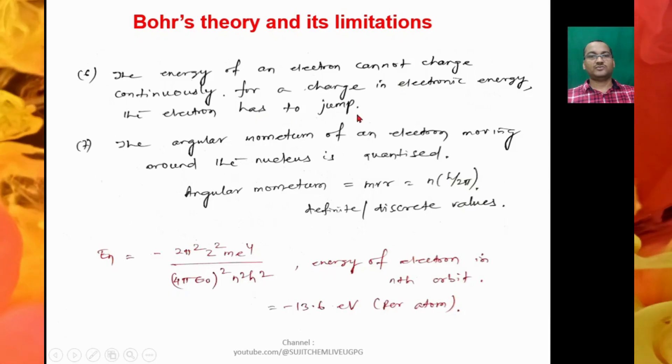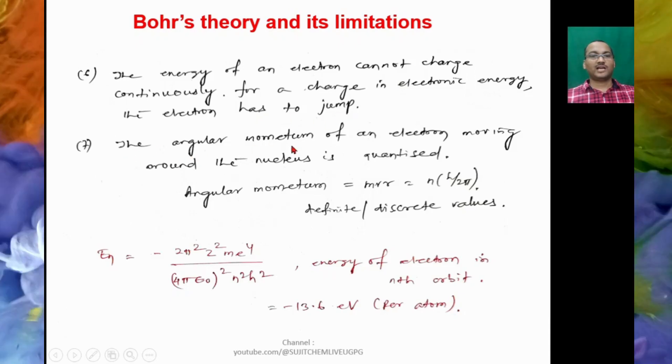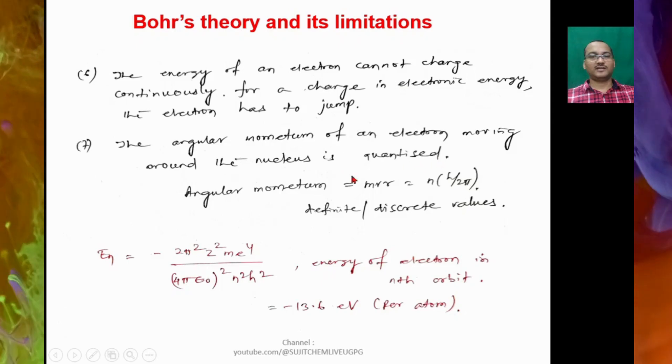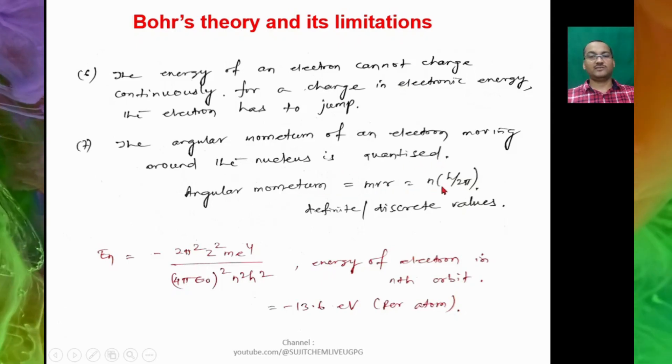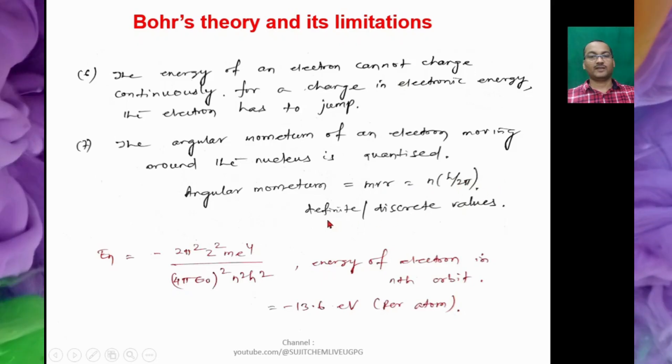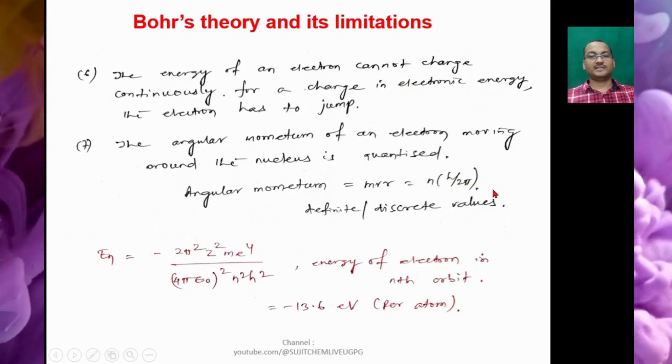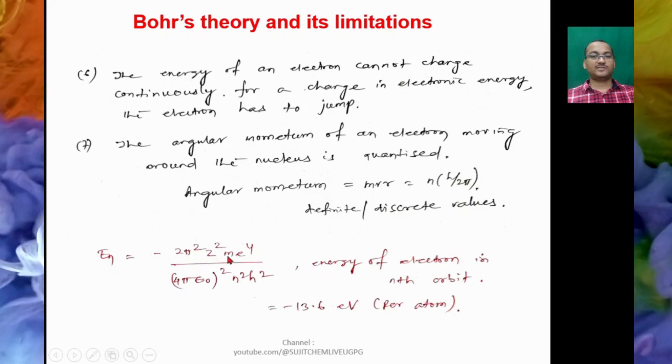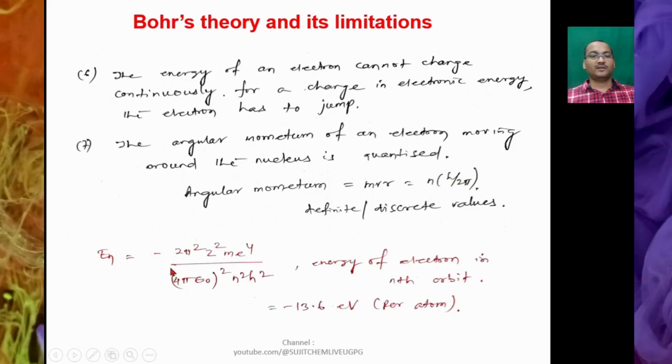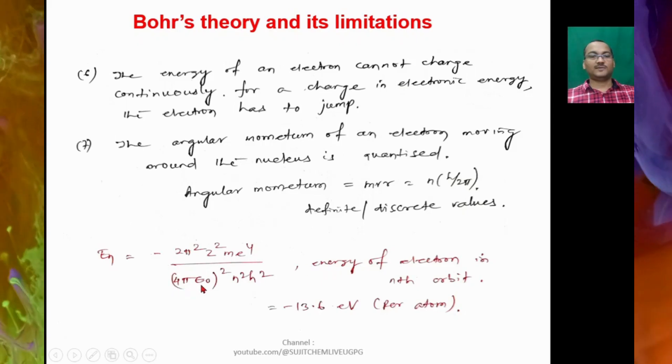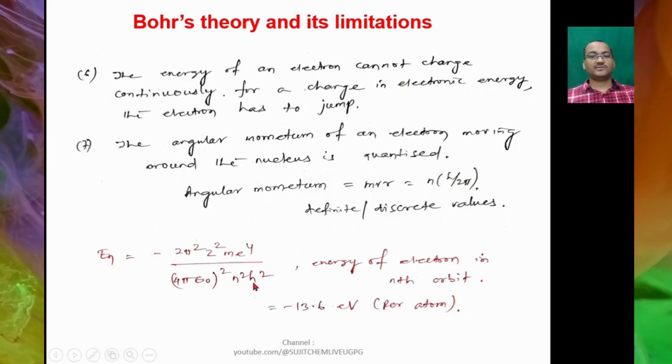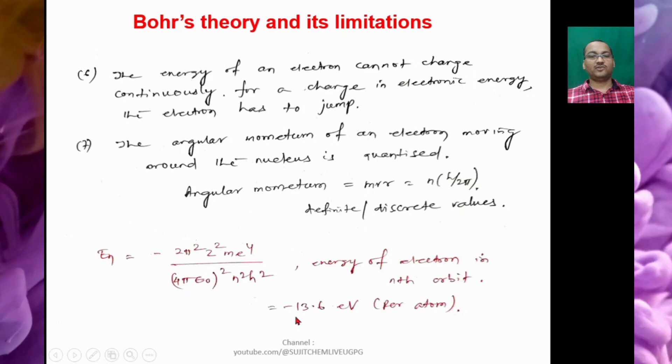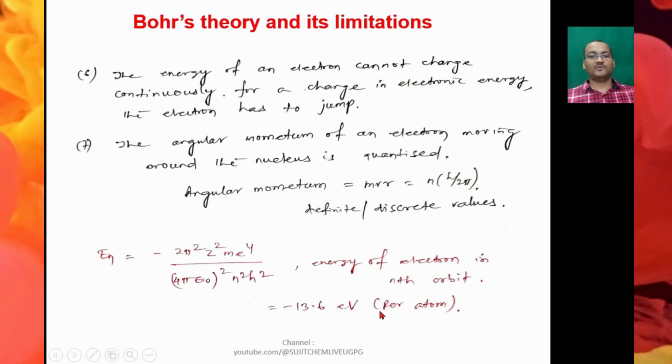The angular momentum of an electron moving around the nucleus is quantized, so angular momentum MVR is equal to NH upon 2π. So that means this has definite or discrete values. The energy EN is found to be minus 2π² Z² ME⁴ divided by (4πε₀)² N² ℏ², so that is the energy of electron in Nth orbit. That is found to be minus 13.6 electron volts per atom.